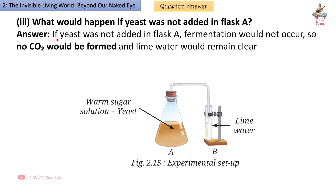Third — what would happen if yeast was not added in flask A? Answer: If yeast was not added, fermentation would not occur, so no CO2 would be formed and lime water would remain clear.